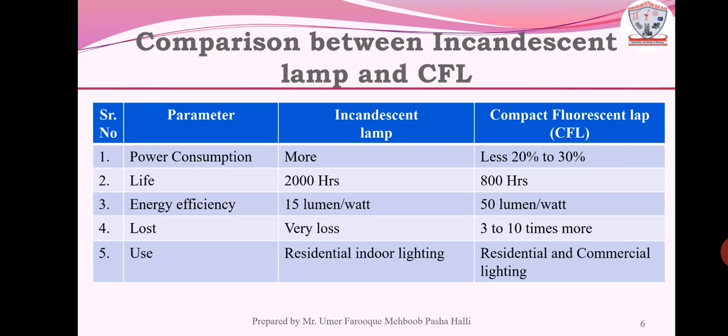We are now comparing CFL with incandescent lamp. Power consumption is more in incandescent lamp but CFL uses 20% to 30% less. Life is 2000 hours for incandescent lamp but 8000 hours for CFL. Energy efficiency is 15 lumens per watt for incandescent but 50 lumens per watt for CFL. Losses are very less in CFL but 3 to 10 times more in incandescent. Uses: incandescent for residential indoor lighting, CFL for residential and commercial lighting.